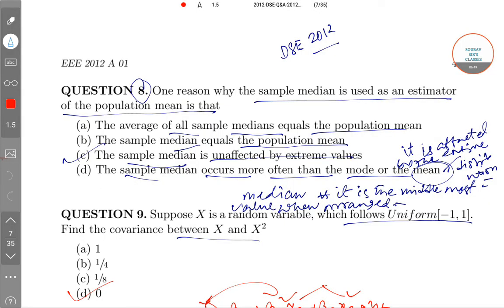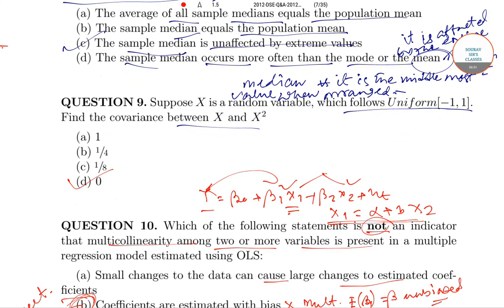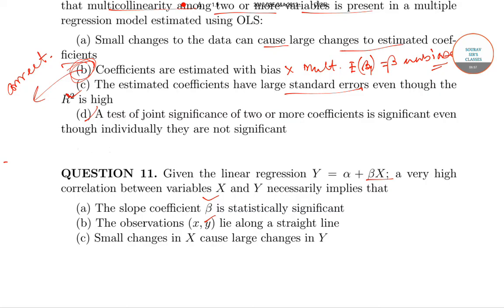Though all the options are very close to each other, the option which is closest is that the observations of X and Y lie along a straight line, which actually sees a linear relationship among X and Y and exactly replicates this. So this is the correct answer.